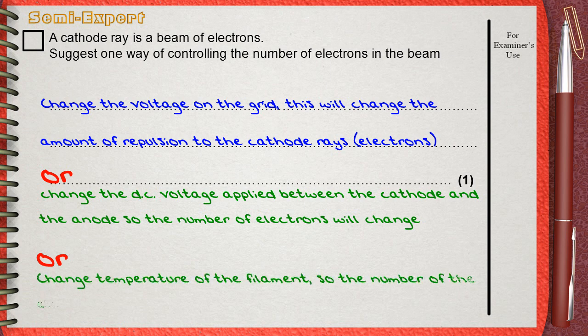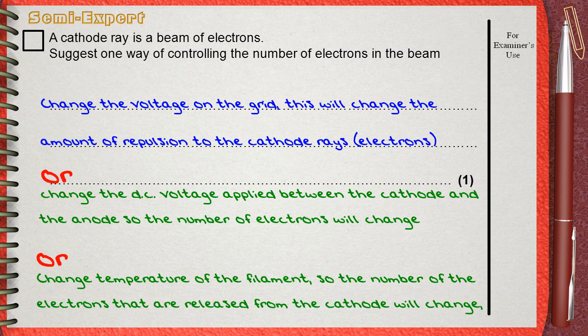A third possible answer: Change temperature of the filament, so the number of electrons that are released from the cathode will change.